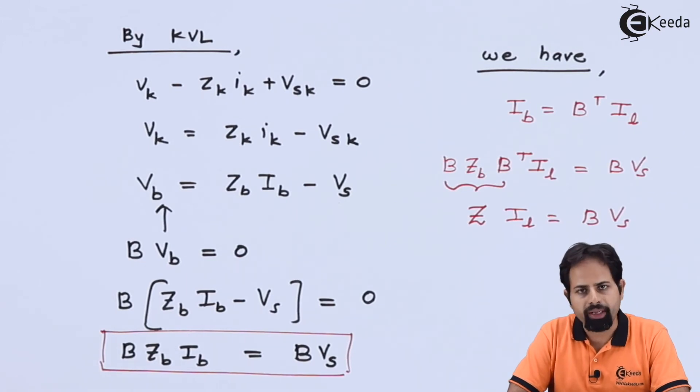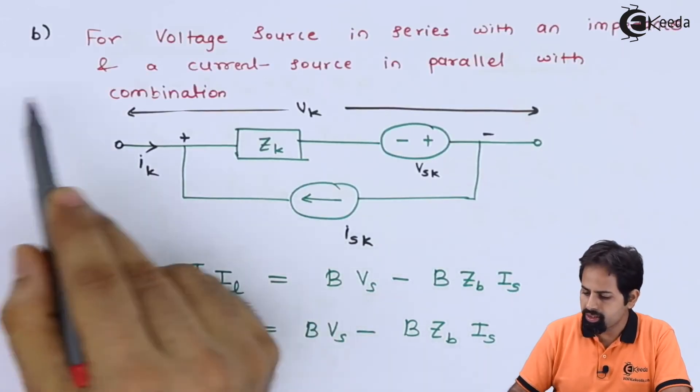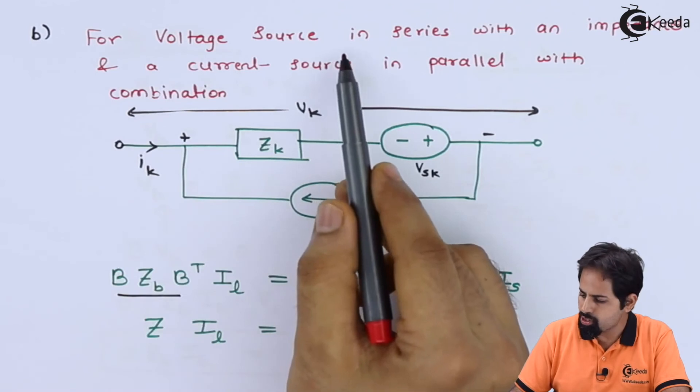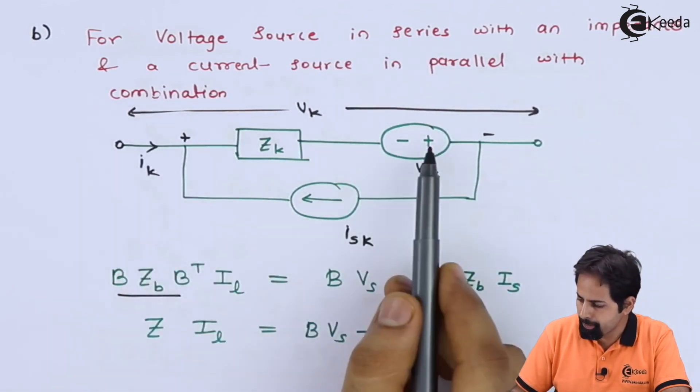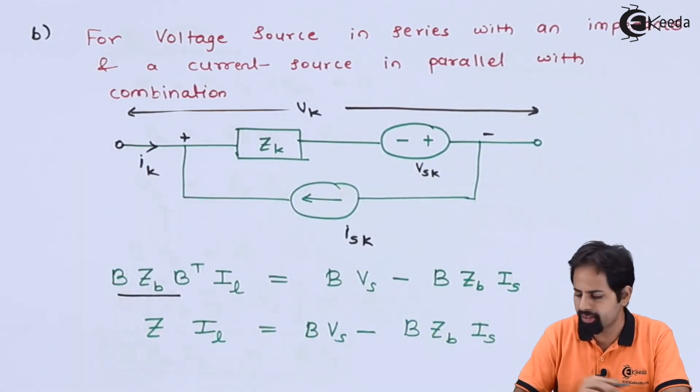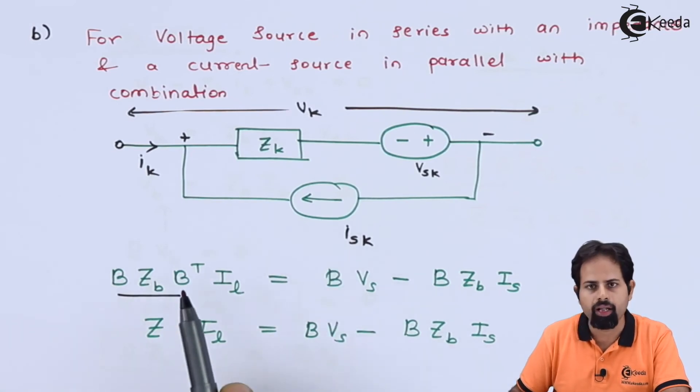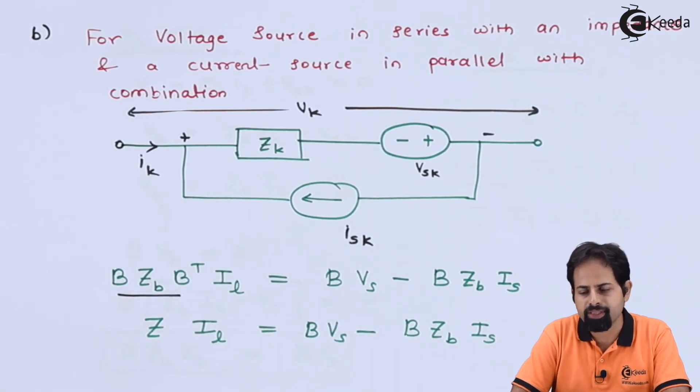Now this was a simple case. Now here you can see this is case 2, that is for voltage source in series with an impedance and a current source in parallel, that is ISK current source in parallel. By using almost same steps,